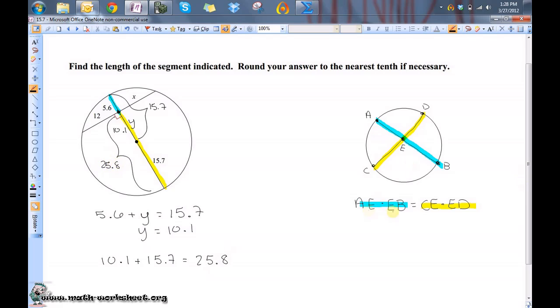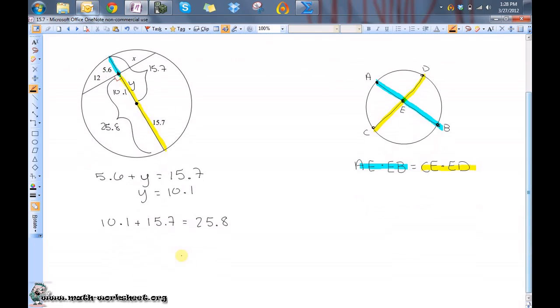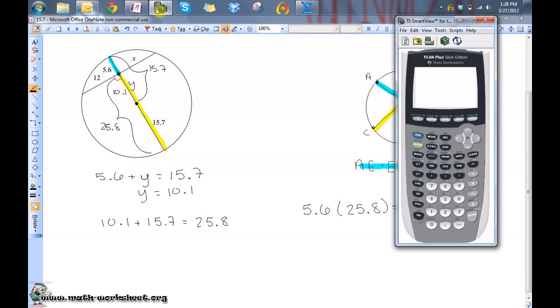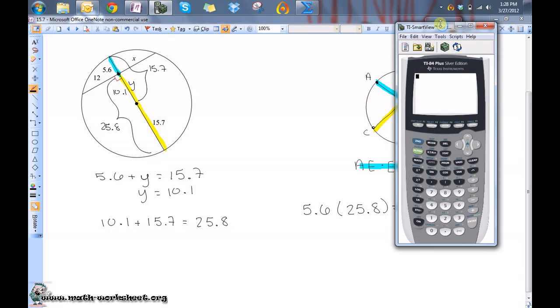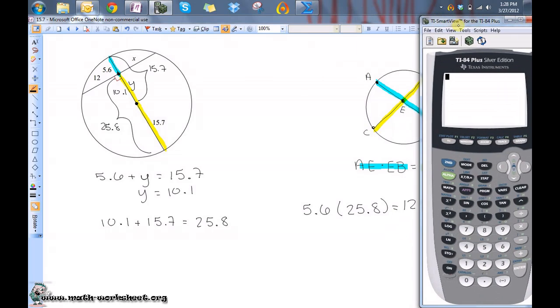So the two values we're going to use to multiply are 5.6 and 25.8. So 5.6 times 25.8 equals 12 times x.